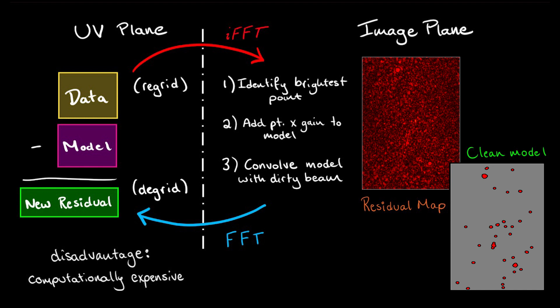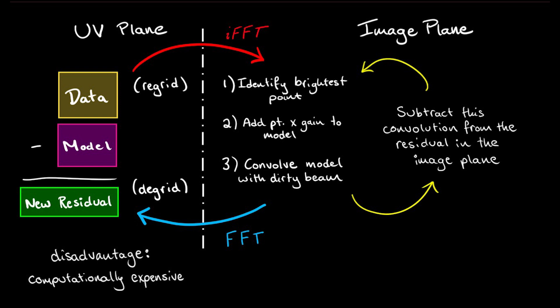Instead, what is done is that after adding the first CLEAN component to the model, we subtract the model components convolved with a dirty beam from the residual in the image plane, rather than taking the time to transform back to the UV plane. We then continue to iterate on our new residual, adding many more CLEAN components to the model, operating entirely in the image plane.